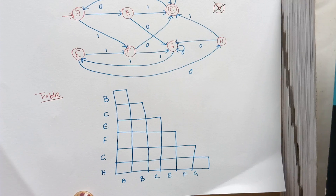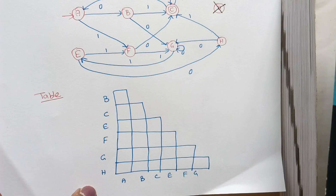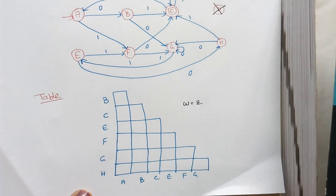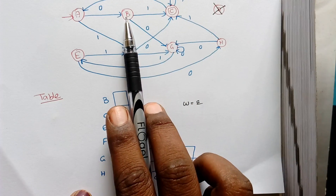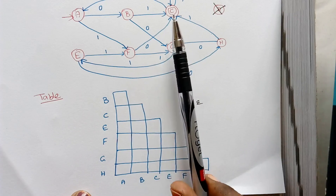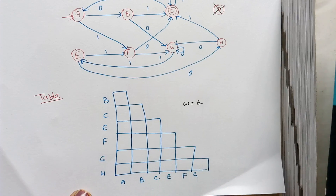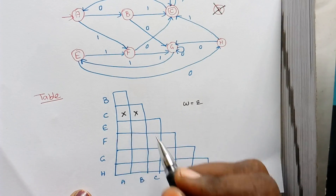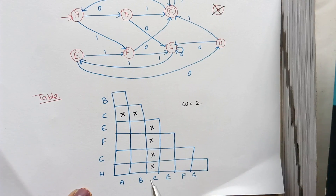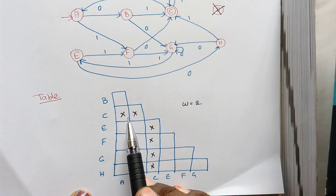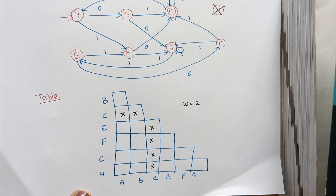The first shortcut is that final and non-final states are always distinguishable. We say two states are distinguishable if on any one possible input, one goes to a final state and the other remains in a non-final state. If we consider the empty string (epsilon) as input, a final state remains in itself and all non-final states remain in themselves. So C, which is a final state, is distinguishable from all other non-final states: C is not equal to A, B, E, F, G, and H. A few rows are cancelled out in the table.